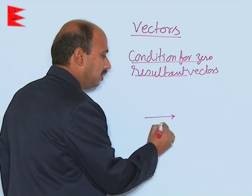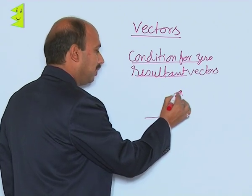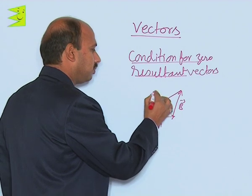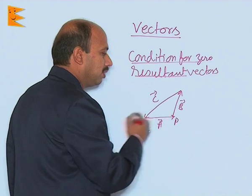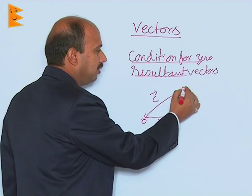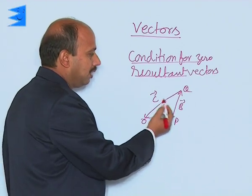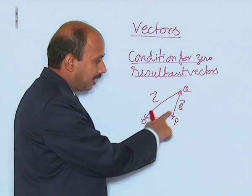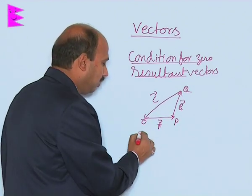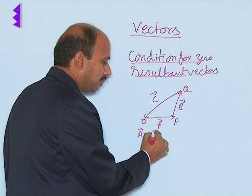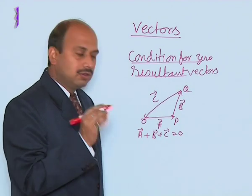Suppose you have taken vector a in this side direction, vector b here, and vector c here. The magnitude of vector a is represented by magnitude and direction represented by OP, b is represented by PQ, and c is represented by QO. So vector a, vector b, and vector c are representing 3 sides of a triangle, and all these vectors are taken in the same order. Then we can write vector a plus vector b plus vector c is equal to 0 — their resultant is 0.